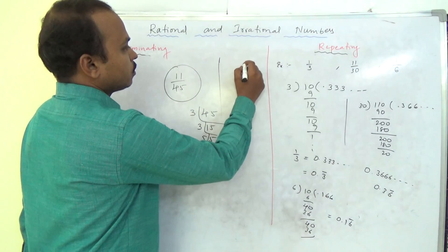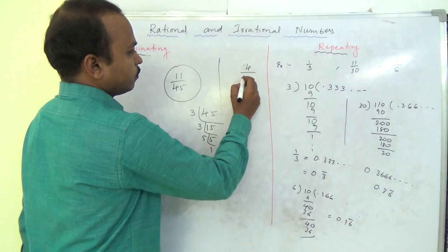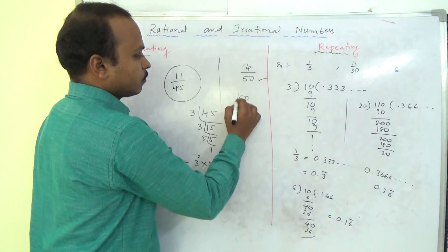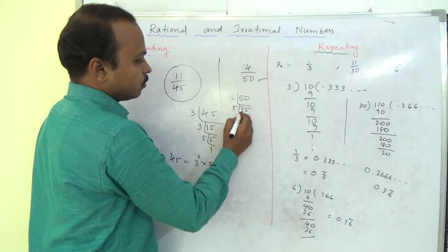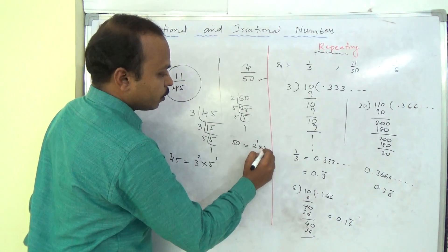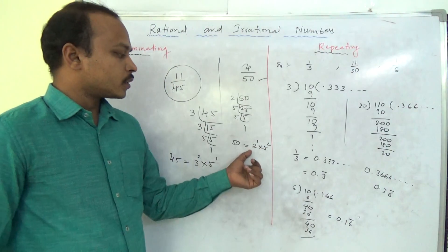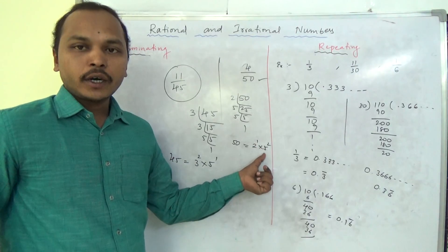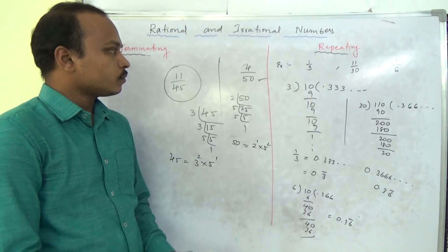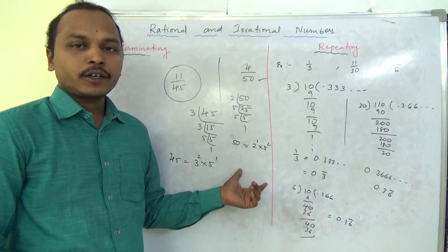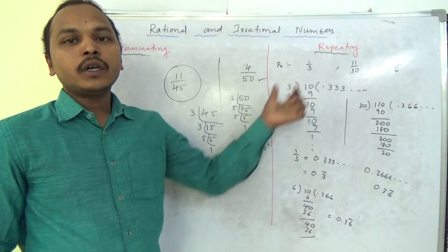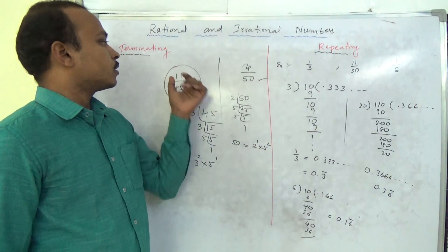Last example: 4 by 50. The denominator is 50. We can write 50 as 2 × 25, and 25 is 5 × 5, so 50 equals 2 to the power 1 times 5 to the power 2. In terms of prime factors, there is only 2 and 5 — no other number. So 4 by 50 is a terminating decimal. To summarize: take the denominator, find its prime factor notation; if any prime other than 2 and 5 appears, it is repeating; if only 2 and 5 appear, it is terminating.